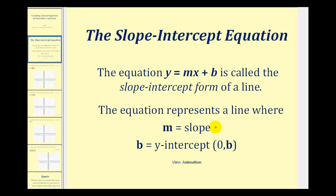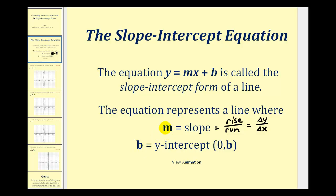Remember, we can define the slope as the ratio of the rise to run for a line, or more precisely, we can define this as the ratio of the change of y to the change of x. So if we can look at the equation in slope-intercept form and identify the y-intercept and the slope, this is enough information to graph the line.